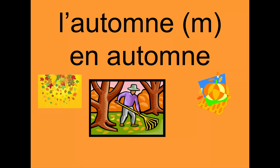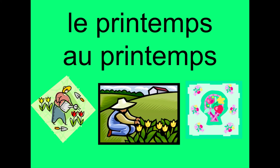L'automne is the word for fall. Again, a masculine word. And if we want to say in fall, we say en automne. Le printemps — that's the word for springtime or spring. And if we want to say in the spring, we say au printemps. Au printemps. That one is just slightly different — it has the AU because it does not start with a vowel sound.